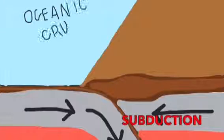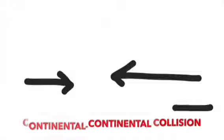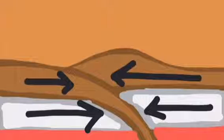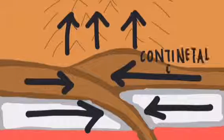When the plates collided, they could not subduct as they were similar masses. As a result, the plates forced the land upwards, forming mountain structures.